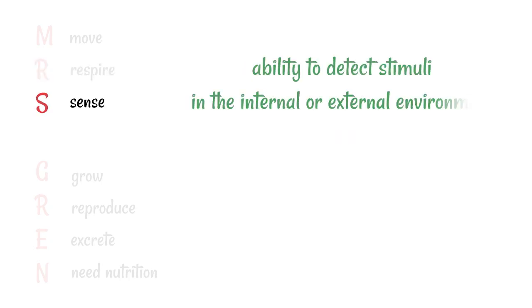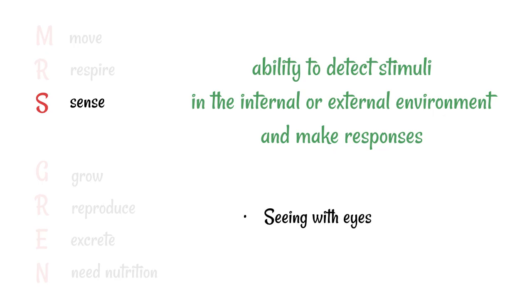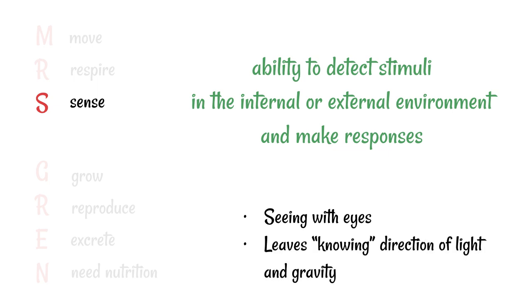All living things can sense, and that is the ability to detect stimuli in the internal or external environment and make responses. Obvious examples include seeing with eyes and being able to smell and hear. In plants, another example would be leaves knowing which direction the light is in, or knowing which direction gravity is, and so being able to grow in the right direction towards or away from it.